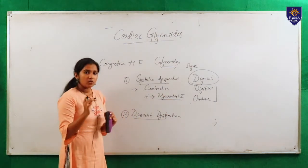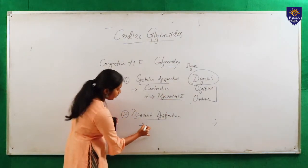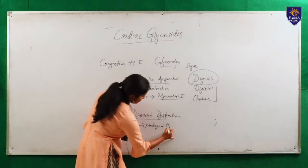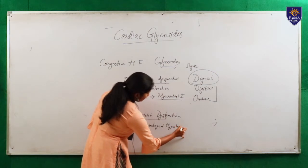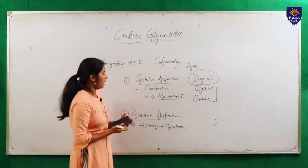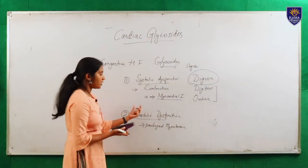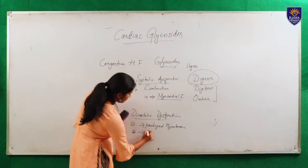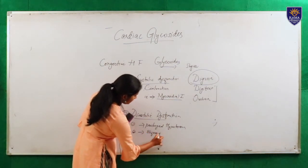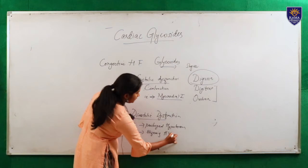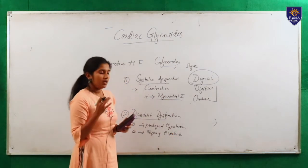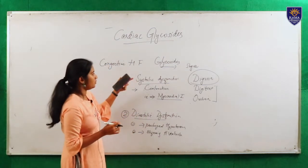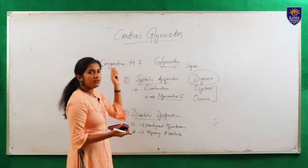The next one is diastolic dysfunction. Diastolic dysfunction mainly happens due to two reasons. The first is prolonged hypertension — patients with chronic hypertension can develop diastolic dysfunction, which further leads to congestive heart failure. The second reason is stiffening of the heart ventricles. When the myocytes in the ventricles get stiffened, their ability to contract decreases. These are the two dysfunctions that may lead to congestive heart failure.